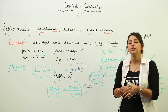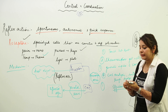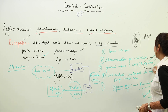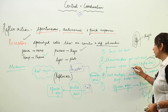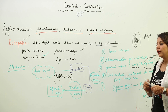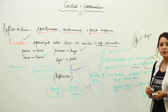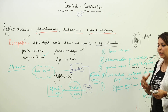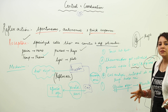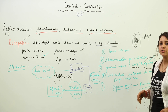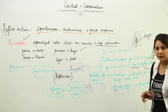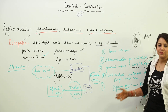Most reflex actions are taken up at the spinal cord level. So while we generally write CNS, if you encounter the term 'spinal cord' in certain books or answers, don't get confused — most reflex actions take place at the spinal cord level.